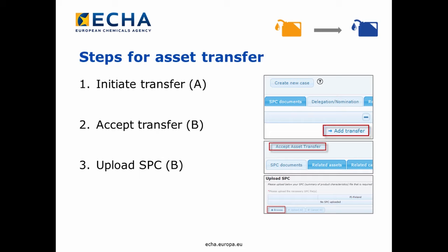Company B will also have to upload a summary of product characteristics, the so-called SPC. The Evaluating Member State Competence Authority will proceed to approve the asset transfer. Once approved, the asset will then belong entirely to company B.